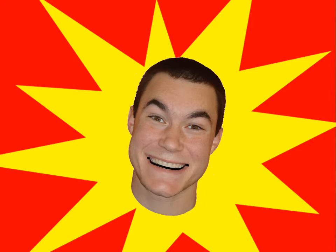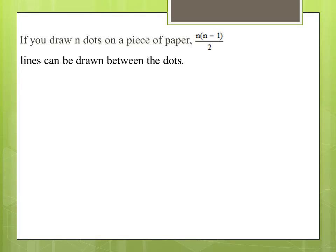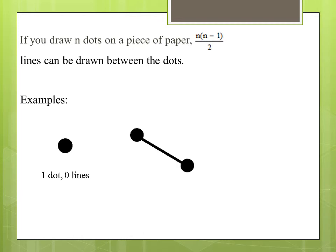These problems can sometimes be more difficult, but we can do it together! If you draw n dots on a piece of paper, n times n minus one over two lines can be drawn between the dots. Here are some examples. In the first example, there is one dot and zero lines.